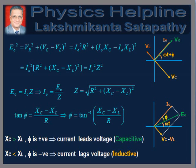From the figure, tan(φ) = (Xc − XL) / R. Therefore, φ = tan⁻¹[(Xc − XL) / R], and I0 = E0 / Z, which completely defines the current. When Xc > XL, tan(φ) and φ are both positive, meaning current leads voltage and the circuit exhibits capacitive behavior. When Xc < XL, tan(φ) and φ are both negative, so current lags behind voltage and the circuit exhibits inductive behavior.